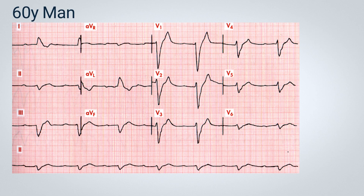The first electrocardiogram we will examine is displayed on the screen, featuring a 60-year-old male patient. I suggest pausing the video to carefully analyze the ECG before I begin discussing it in detail. Upon examining this particular ECG, we can clearly observe a significant widening of the PR interval accompanied by a sinus rhythm. Additionally, there is an extremely widened QRS complex that does not correspond to any specific conduction disturbance, such as left or right bundle branch block. This widened QRS complex is also associated with a sharply peaked T wave. These findings suggest a potential case of severe hyperkalemia.